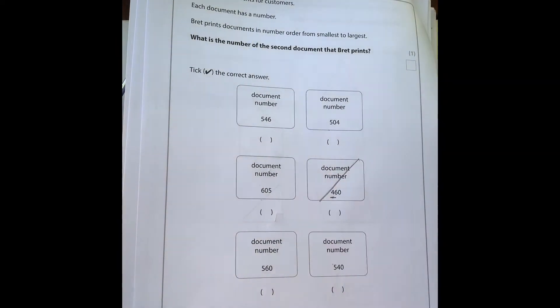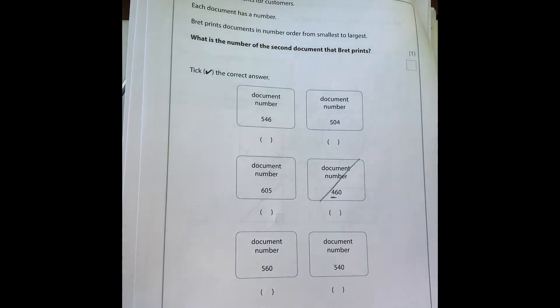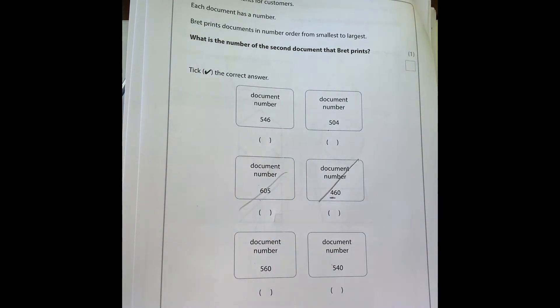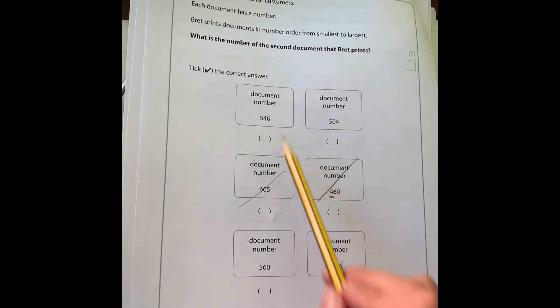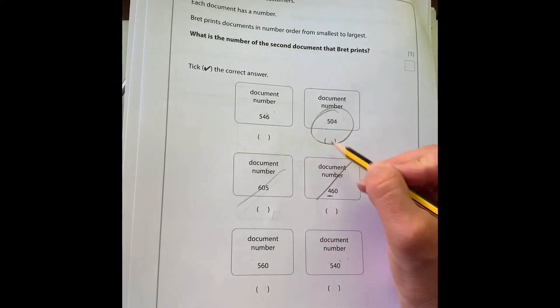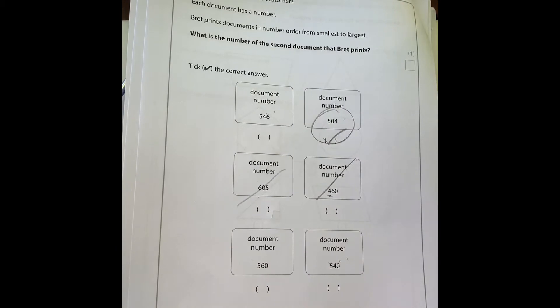The next smallest number is not 605 because that's too big. The smallest of these four numbers is this one here: 504. So that is the second document that he would print.